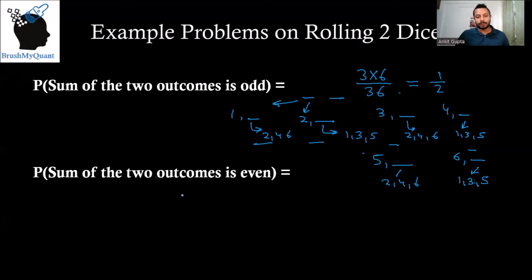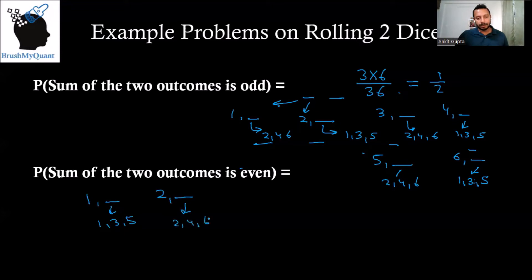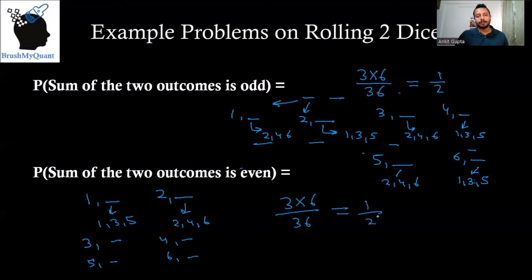How do we find the probability that the sum of the two outcomes is even? For the sum to be even, both outcomes must either be odd or both be even. Following the same method, for each of the six outcomes in the first place, there are three matching choices in the second place. So total choices are three times six divided by 36, which is also equal to one by two.